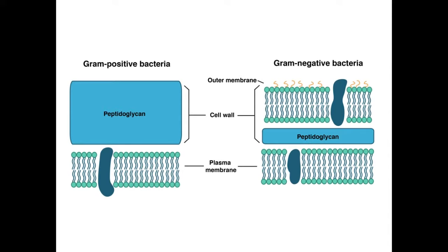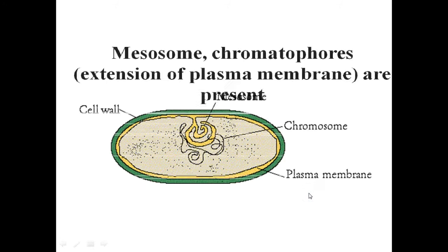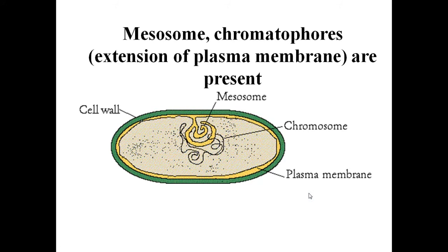The mesosome is a special membranous structure formed by the extension of the plasma membrane into the cell. These extensions are in the form of vesicles, tubules, and lamellae. They help in cell wall formation, and during DNA replication and distribution to daughter cells, they play a main role. They also help in the respiration and secretion process to increase the surface area of the plasma membrane and enzymatic content.